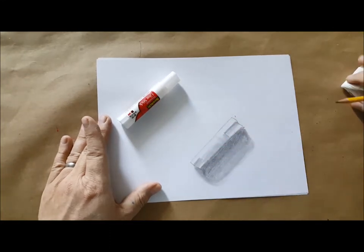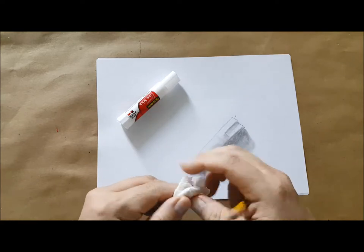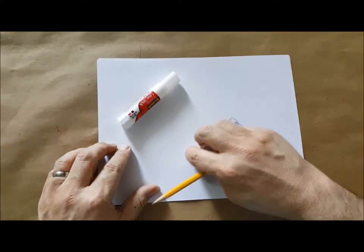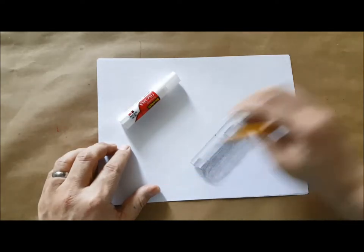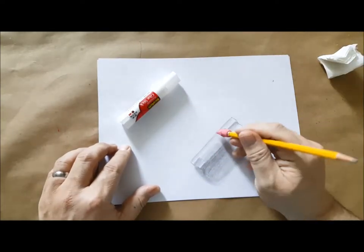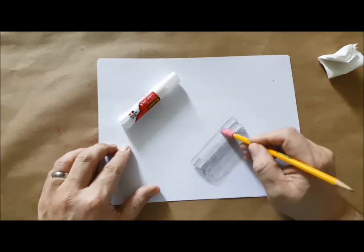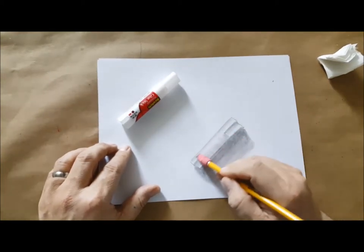And I'm going to actually add a little shadow down on the back edge, just with my dirty tissue. The reason I did that is so that when I erase here, the shine stands out even more.